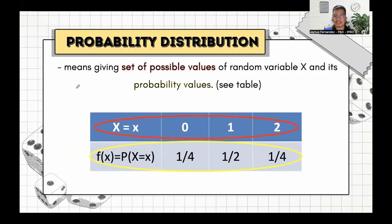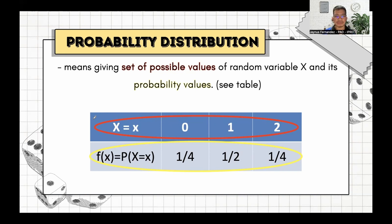As shown in the table, this is an example of a probability distribution, or simply the distribution of random variable X that we solved earlier. A probability distribution gives the set of possible values of random variable X — which are 0, 1, and 2 — and their corresponding probability values: 1/4, 1/2, and 1/4. When X=0, P=1/4; when X=1, P=1/2; when X=2, P=1/4. That is the concept of probability distribution.